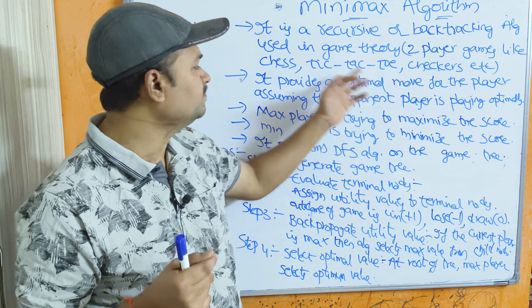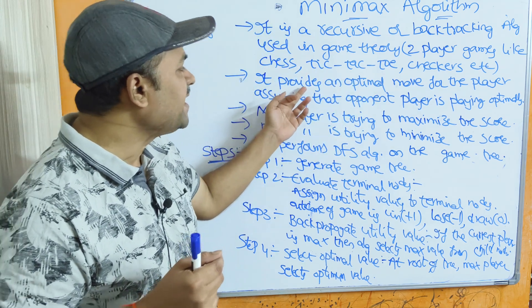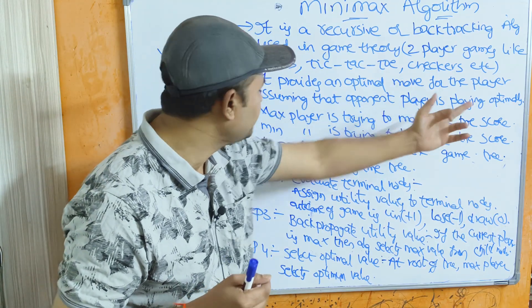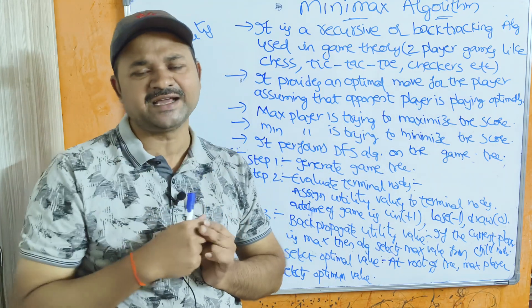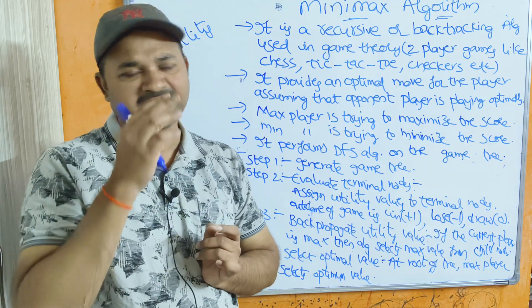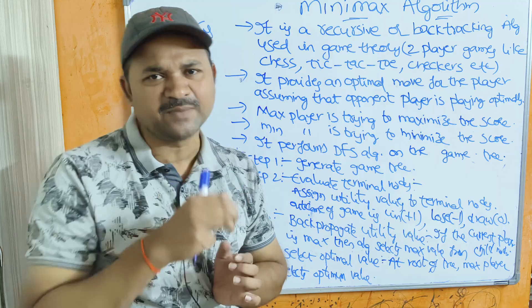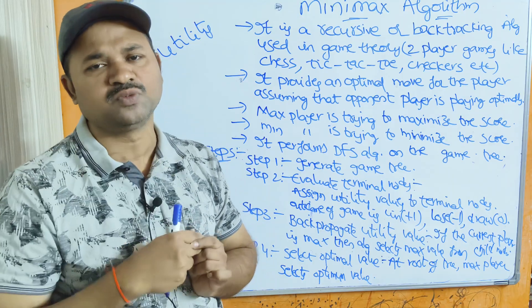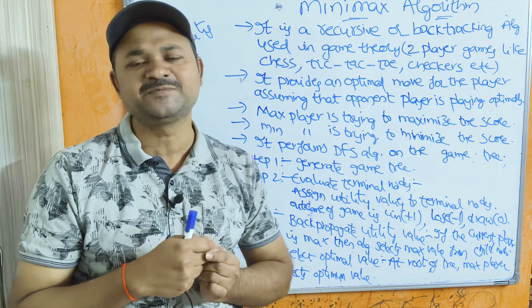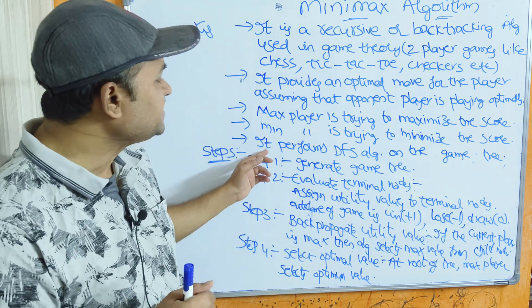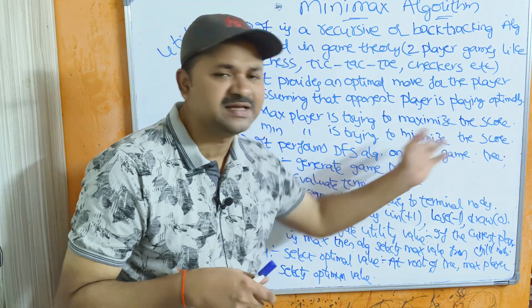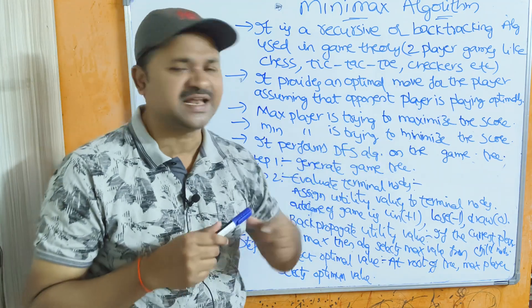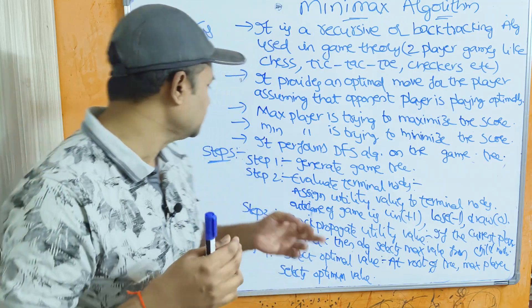Minimax algorithm provides an optimal move for the player, assuming that the opponent is also playing optimally. The Max player makes a move assuming the Min player plays optimally, and likewise the Min player makes a move assuming the Max player plays optimally. Minimax performs a DFS algorithm on the game tree.